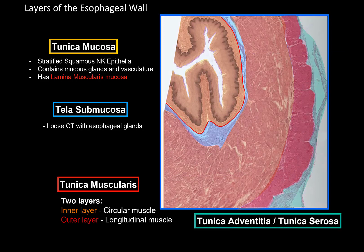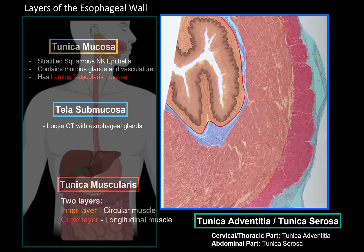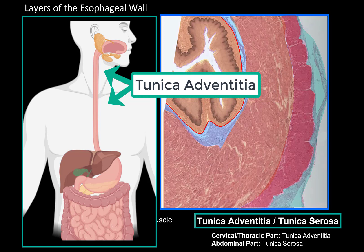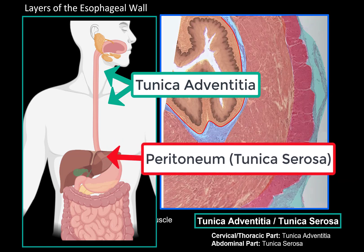The last layer is a protective outer layer consisting of either fibrous tunica adventitia or serous tunica serosa. In the cervical and thoracic regions, the esophagus is covered by a thick connective tissue called tunica adventitia. But once the esophagus passes through the diaphragm and becomes the abdominal part, it is covered by the peritoneum, which protects abdominal organs and forms a serous coat so organs can slide without friction — this is called tunica serosa. So only the abdominal part has tunica serosa, while the rest has tunica adventitia.